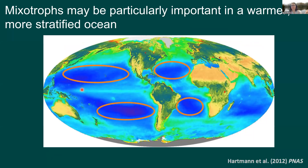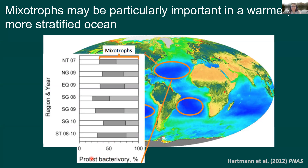A common place where mature environments occur regularly is open ocean gyres, where there's not a lot of turnover: largely stable environments, very low nutrient concentrations, a lot of recycled nutrients, and as a result very low plankton concentrations. Within these open ocean gyres, a high percentage of bacterivory is attributed to mixotrophs — in many environments over 50% of bacterivory is from mixotrophs. This is very important to keep in mind because these types of regions are thought to be expanding as we see more impacts of climate change.